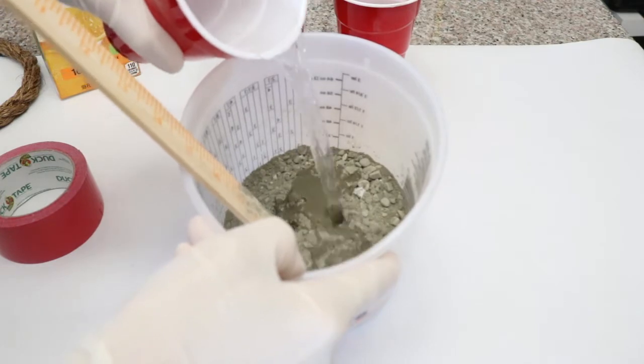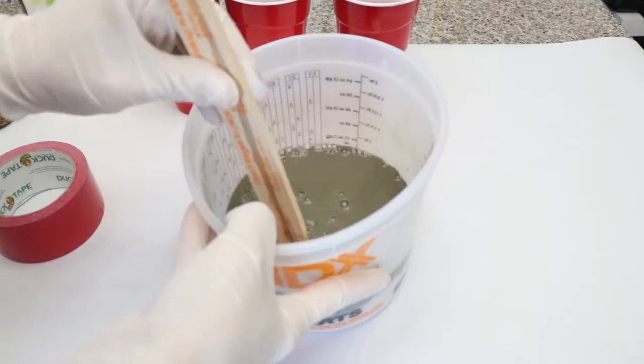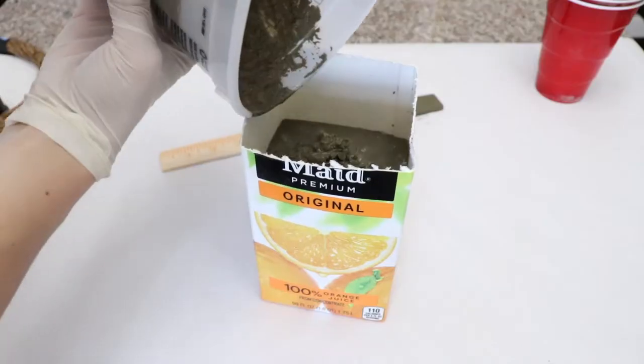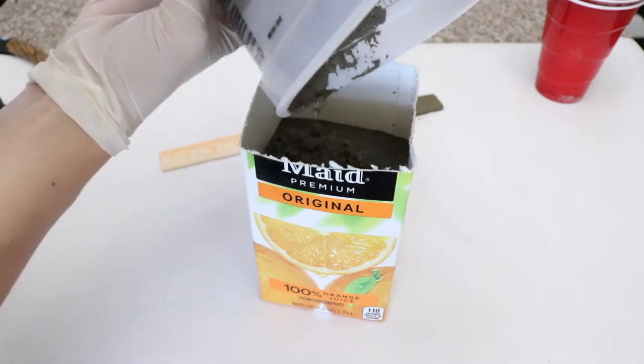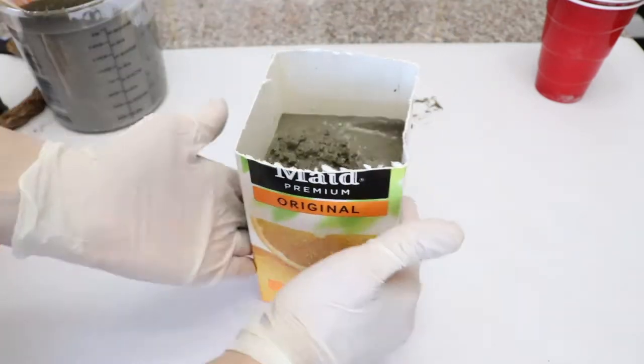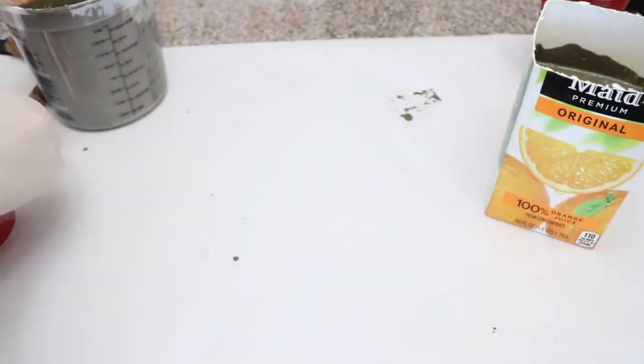Your goal is to have a consistency that's thick but still able to pour. Mix everything together, and then add your concrete mixture to your juice container. Once it's as full as you'd like it, really tap it to let the concrete settle and get out any bubbles.